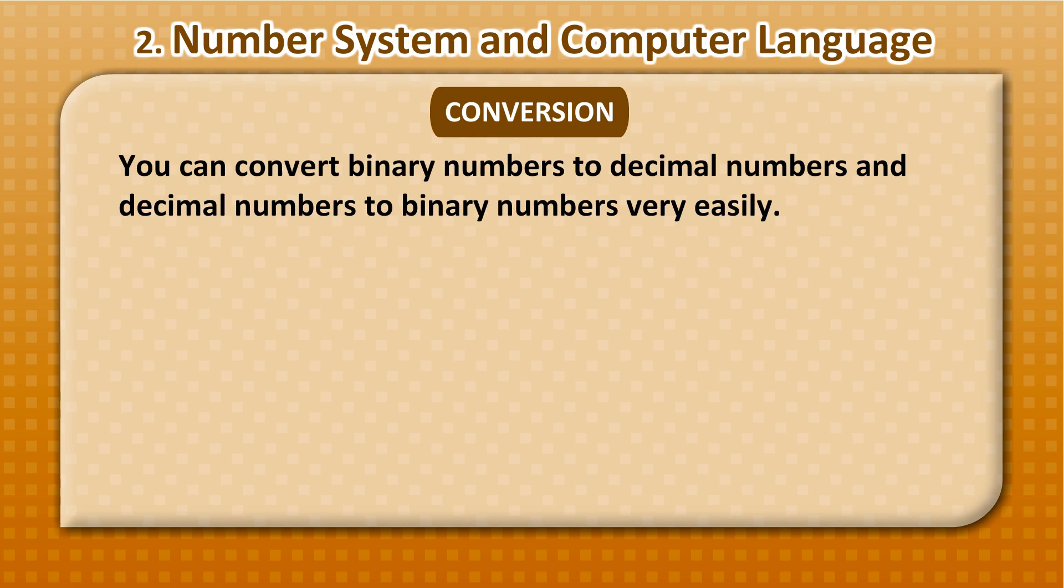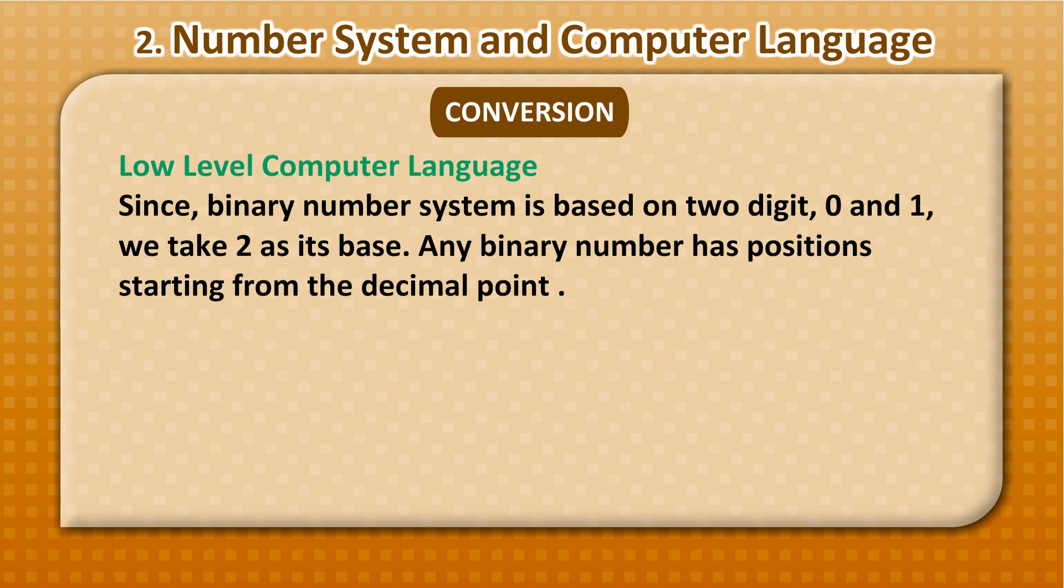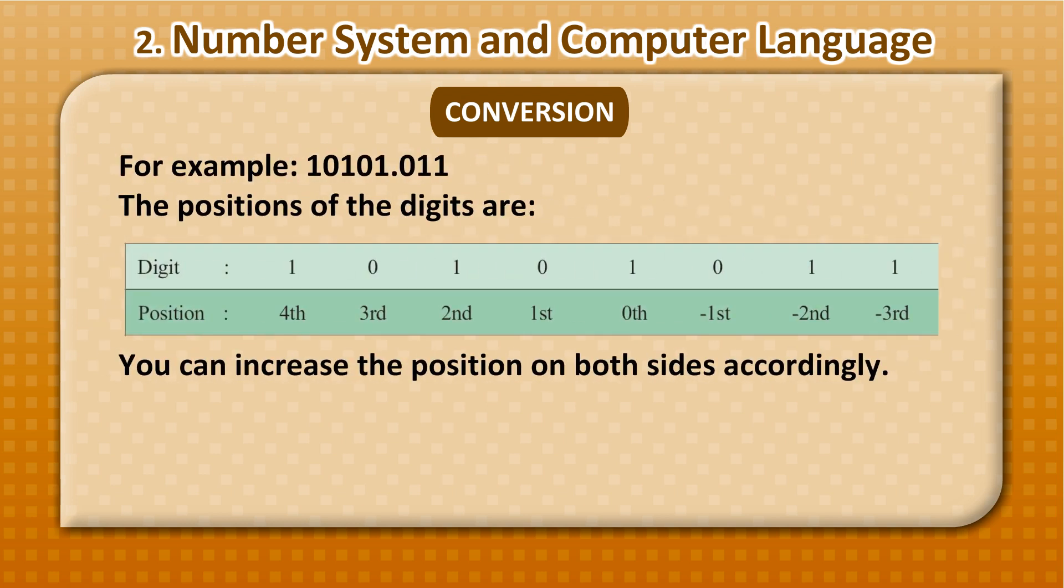You can convert binary numbers to decimal numbers and decimal numbers to binary numbers very easily. Since binary system is based on two digits, 0 and 1, we take 2 as its base. Any binary number has positions starting from the decimal point. For example, 10101.011.